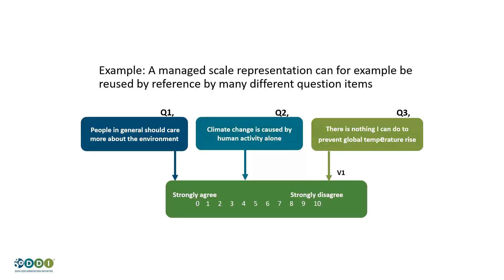Here's an example: I have a scale — zero to 10, strongly agree to strongly disagree. That scale could be used in many different places — three different questions in different questionnaires all using that scale. If I want to switch to a 12-point basis, I would know every question in all my questionnaires that uses that scale. I can look into my management system and programmatically, systematically find those places and make the changes needed. That's a simple example of how DDI Lifecycle uses reuse to benefit the management process.